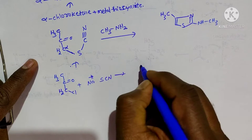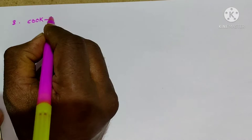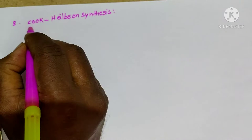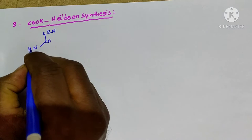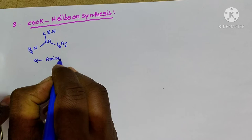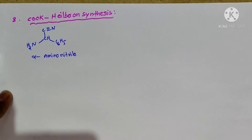Now we discuss about the third preparation method, that is the Cook-Hill-Brons synthesis. In this method we use the alpha-amino nitrile — nitrile means the cyanide group — so in the alpha position we write the amino group; this is alpha-amino nitrile.